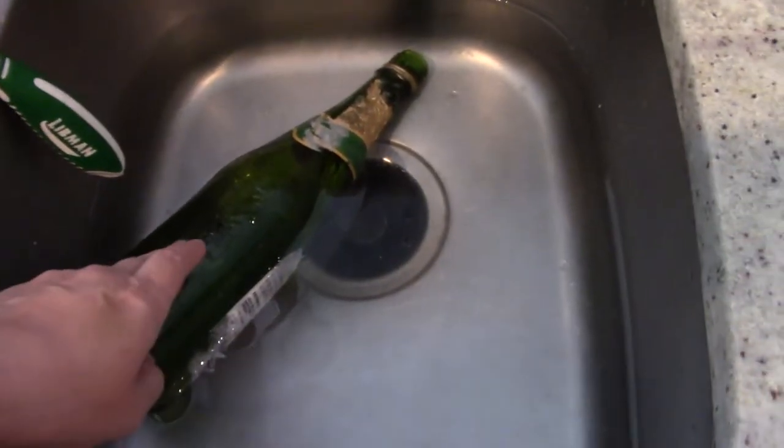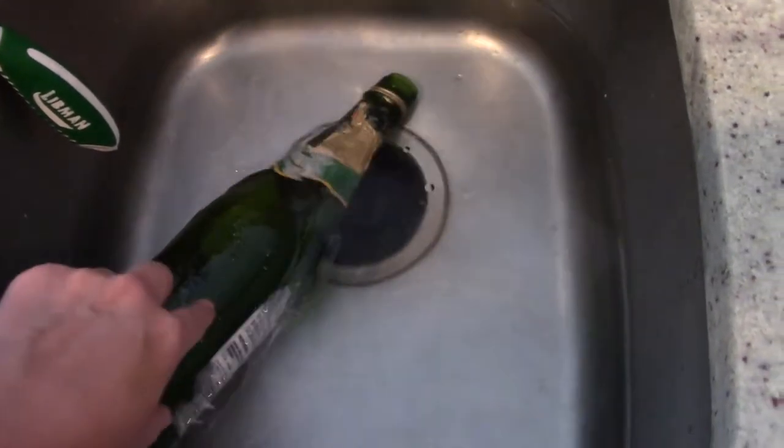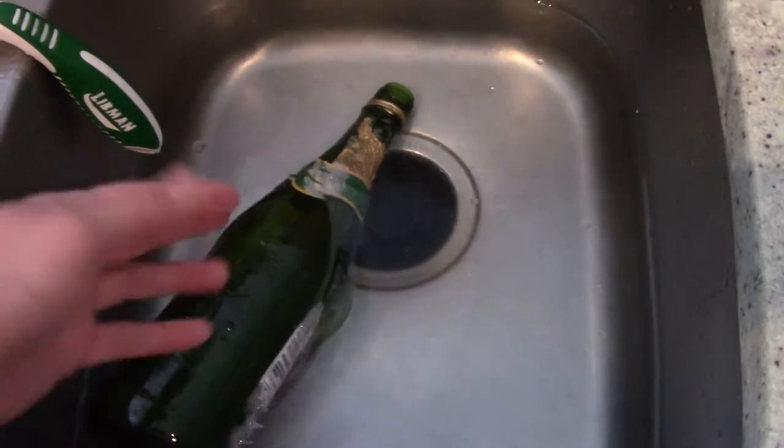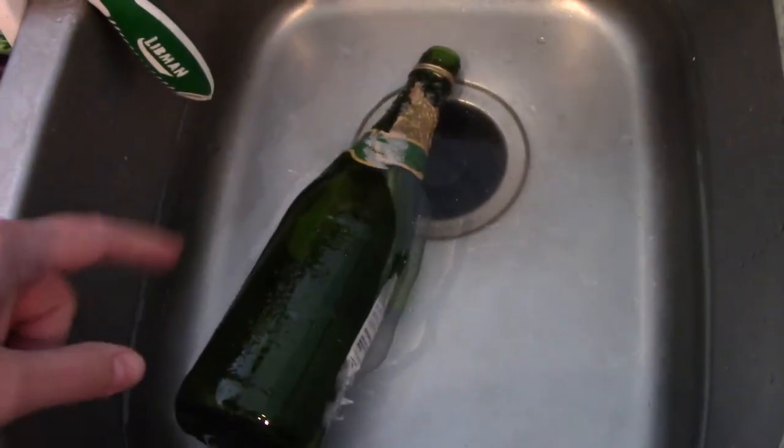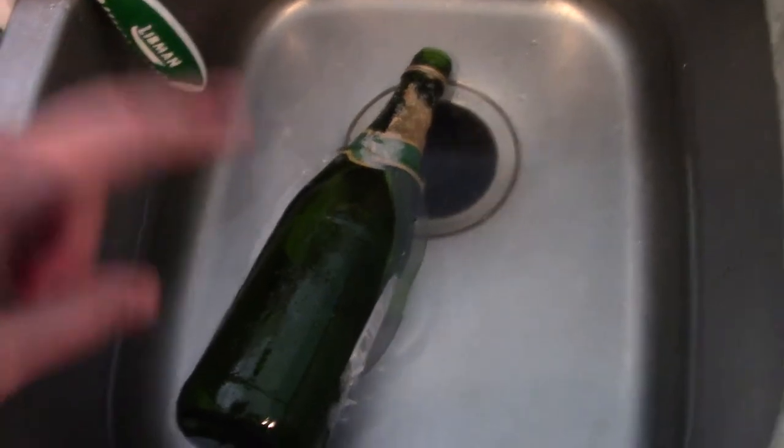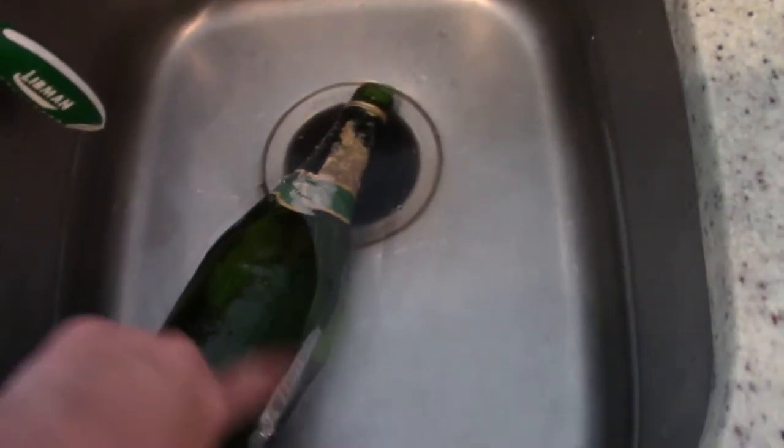So the first step is to soak your bottle in hot water and some sort of oil. I'm using coconut oil. I normally use vegetable oil, but I don't have any right now. So I'm letting that soak so I can take the labels off, peel the labels off.